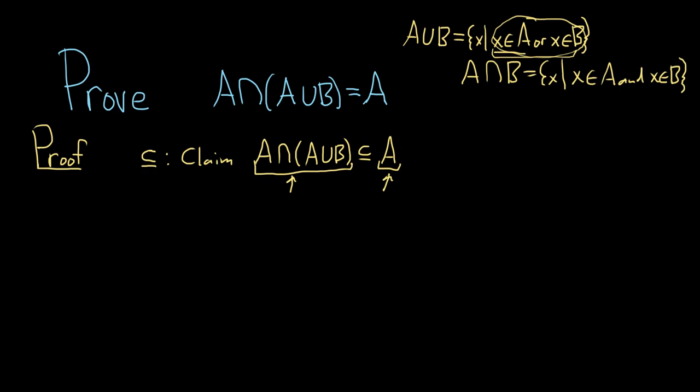So to do that, we start always by taking an element of the set on the left. So we'll say suppose X is an element in A intersect A union B.